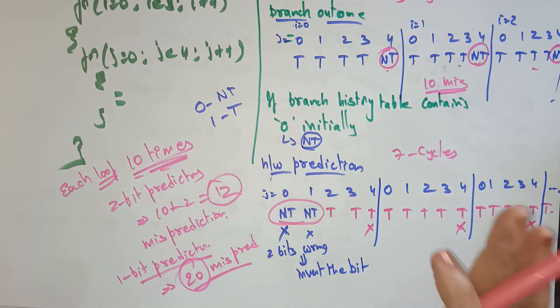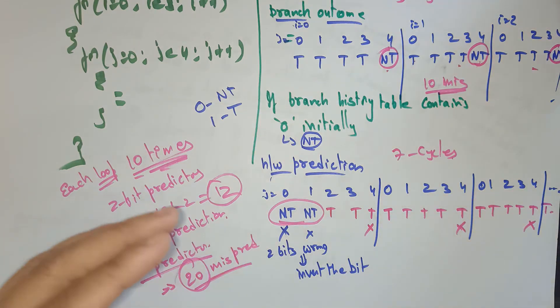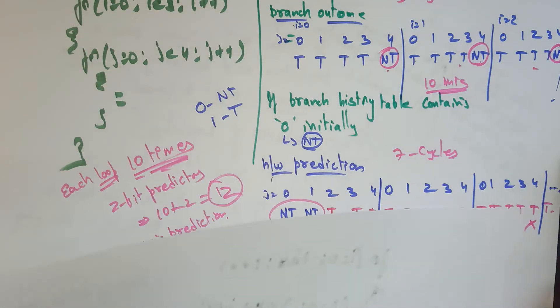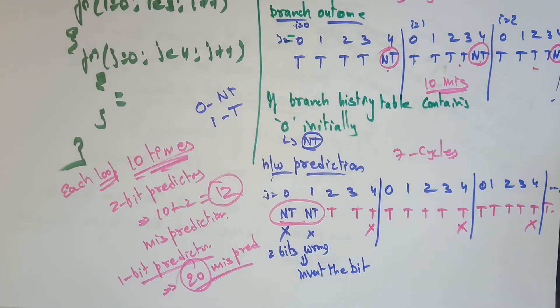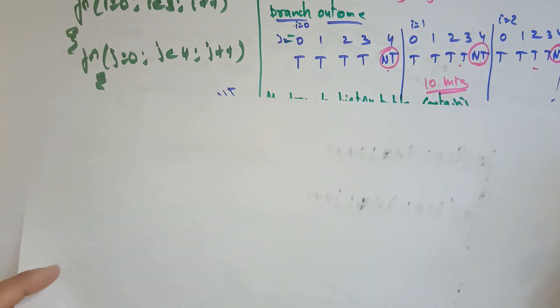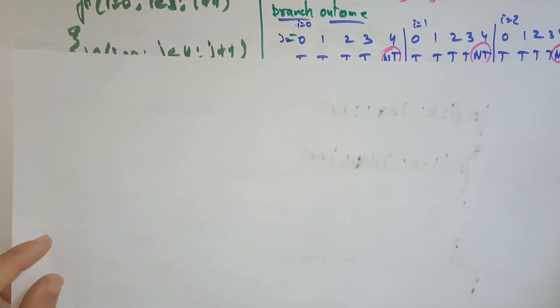Let me take a diagram for this by considering this for loop. The points to remember here are: SLT means strong likely to be taken, LT means likely to be taken, NLT means non-likely to be taken, and SNLT means strong not likely to be taken. Remember these four states.